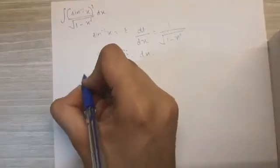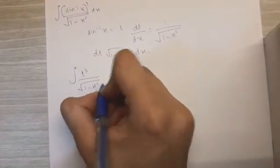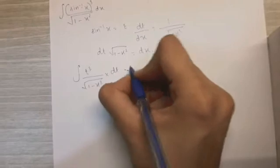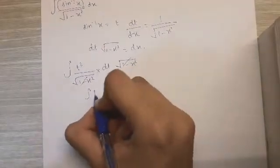So in the integral, we can write t cube upon root 1 minus x squared into dt root 1 minus x squared. The root 1 minus x squared gets cancelled. And we are left with t cube dt.